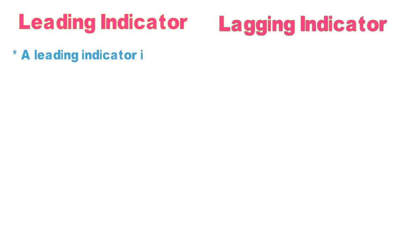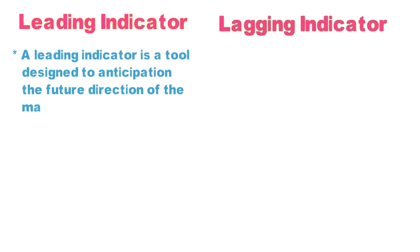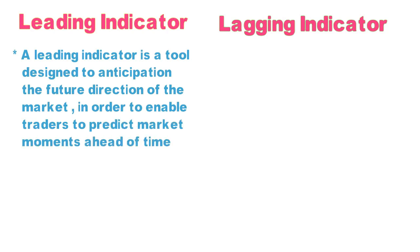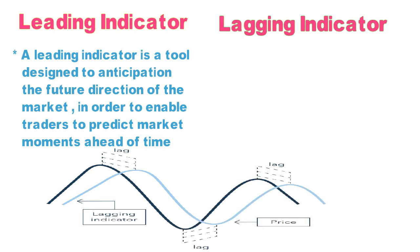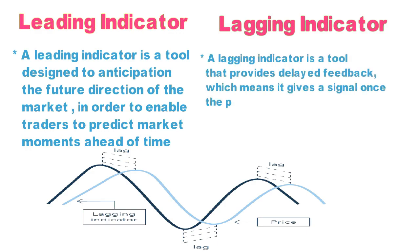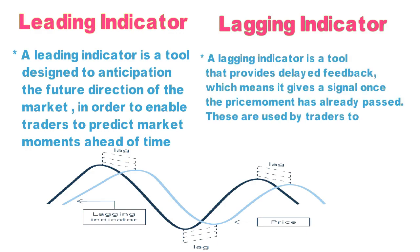There are two categories of indicators: the first is the leading indicator and the second is the lagging indicator. A leading indicator leads the price — before price action or before candle confirmation, the indicator will give a signal about what may happen next. A lagging indicator gives a signal only after price confirmation.